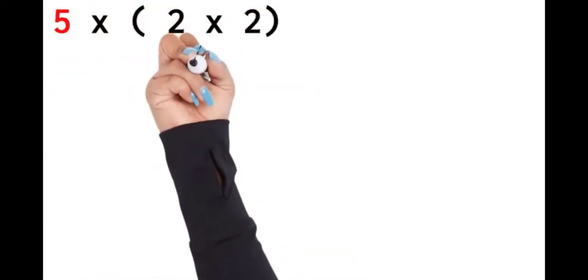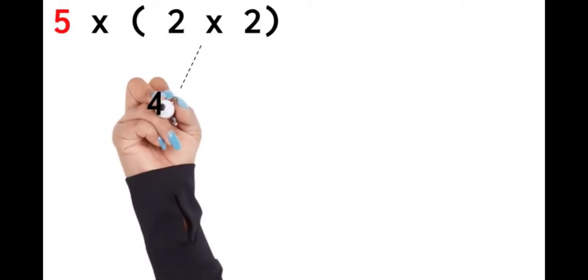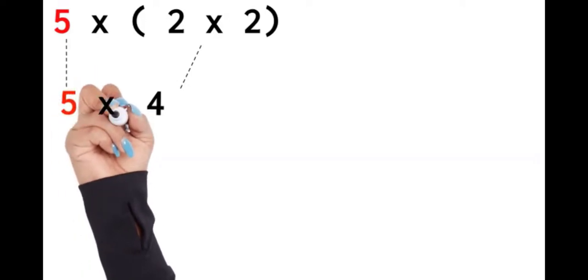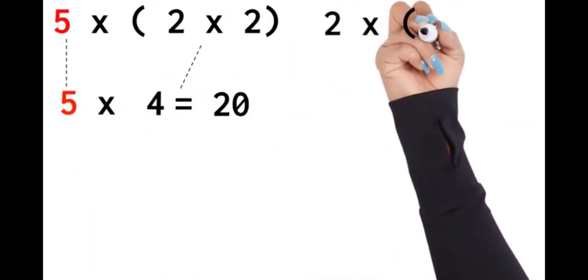Now, if I take the multiplication number sentence, I'm going to multiply what's in the parentheses first. Two times two will give me four. So then I multiply five times four, and the answer is 20.